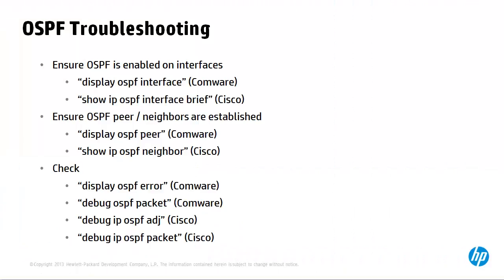If neighbor relationships are not being formed, check that you have connectivity — in other words, ping the neighboring device. Use protocols such as LLDP to ensure that you have a connection to the neighbor. Check that you're in the same subnet and that IP addresses have been configured properly. Ensure that layer 1, 2, and 3 are configured correctly if OSPF neighbors are not being formed.